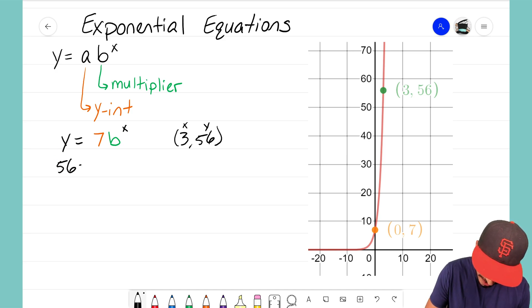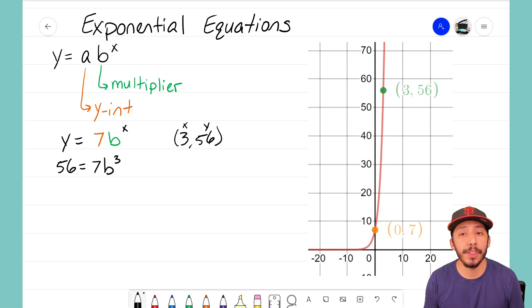So I'm gonna do that. I'm gonna plug in 56 for y equals, bring down the 7, bring down the B because we don't know what B equals, and I know that x here represents 3 so now I have B to the third power.